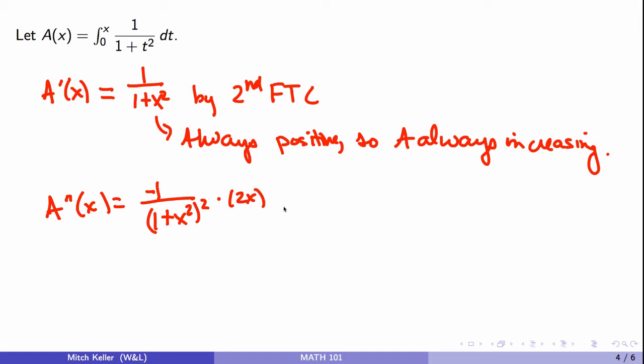And this is going to be negative when x is greater than 0 and positive for x less than 0. So here we get concave down, and here we get concave up.